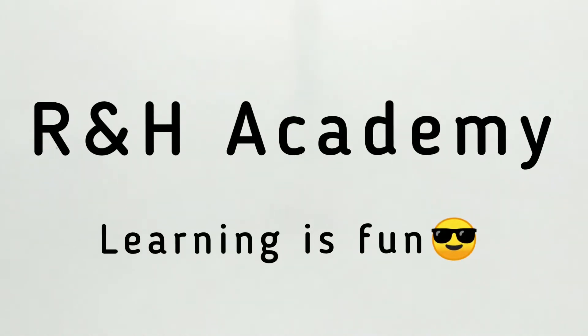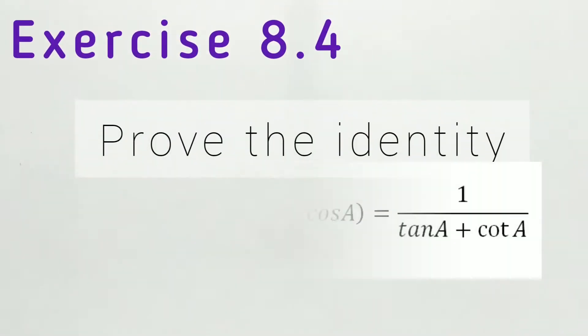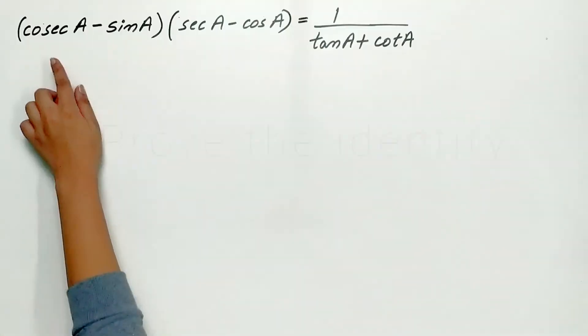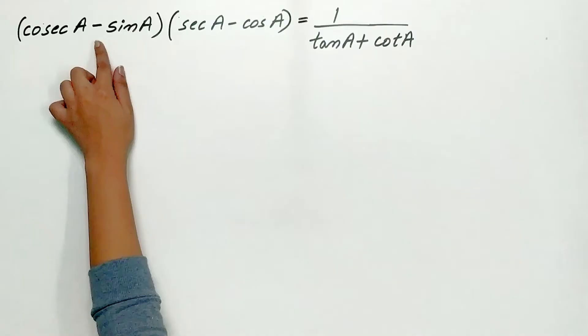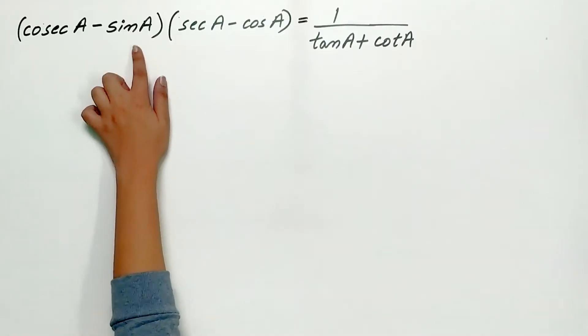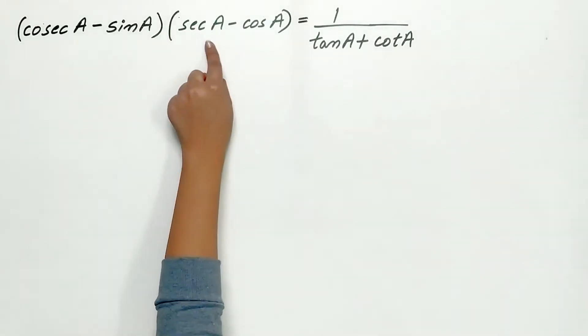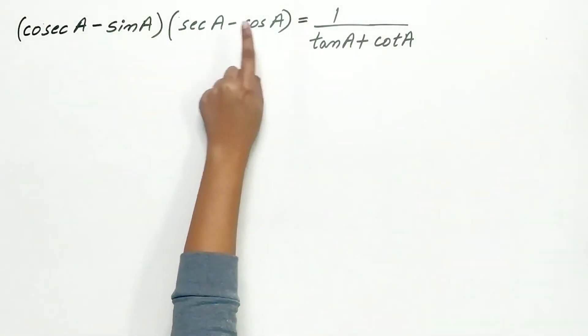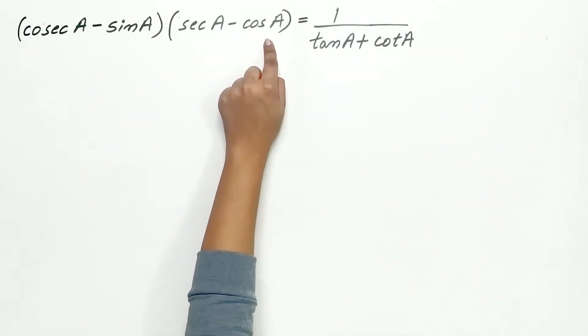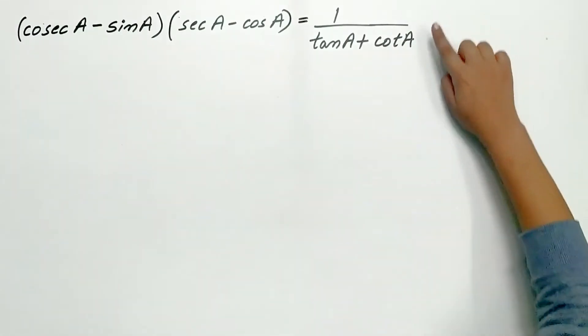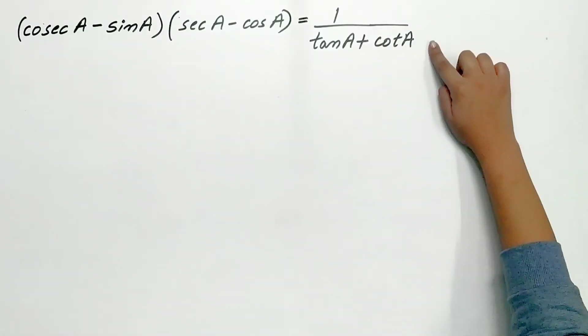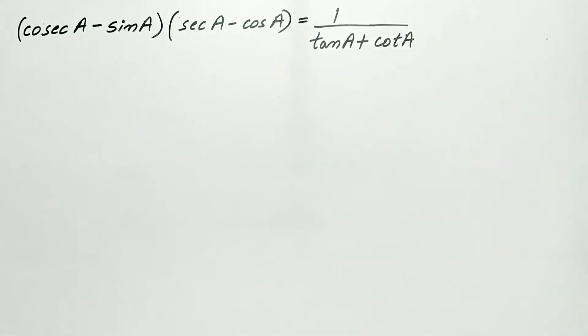Welcome to RMH Academy channel. Part 9, question 5 of exercise 8.4: prove the identity (cosec A - sin A) multiplied by (sec A - cos A) is equal to 1 divided by (tan A + cot A).